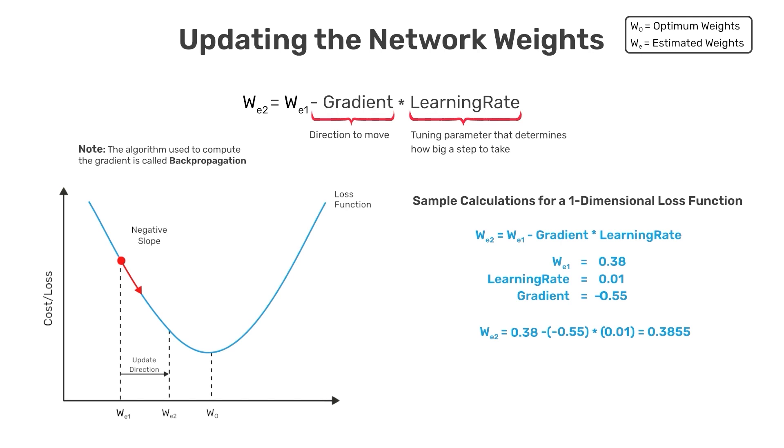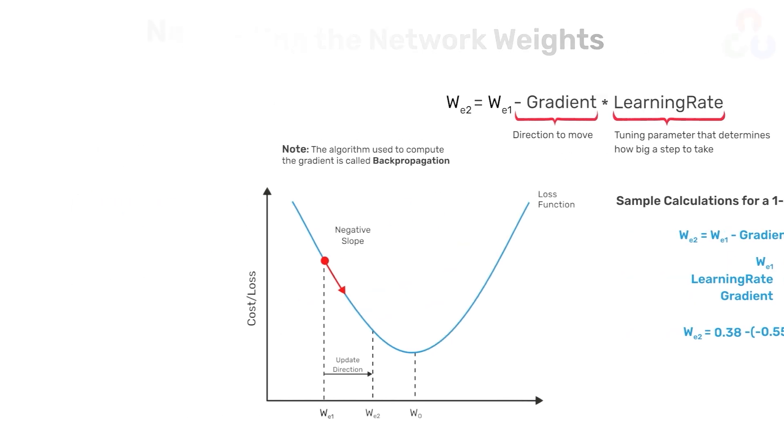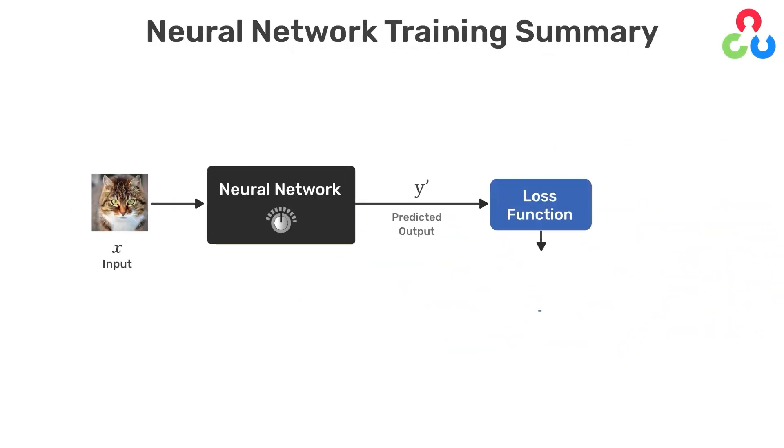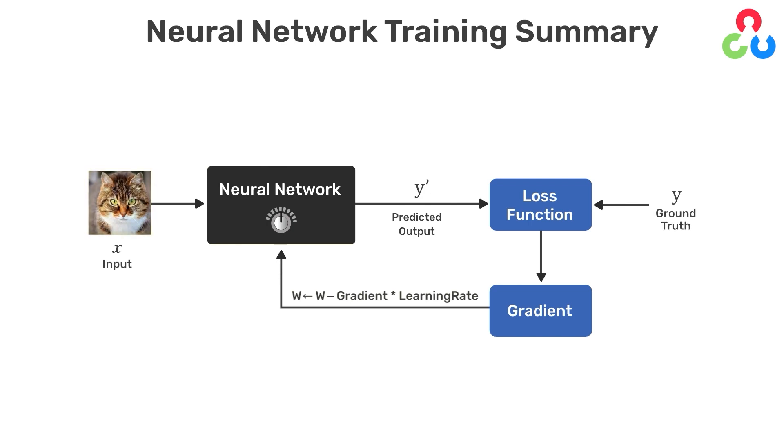Now that we've covered all the essential elements associated with training a neural network, we can summarize the process in the following diagram. Here you can see that we have an input image on the left and the output from the neural network on the right, which we refer to as Y prime. We use the ground truth label Y, which is part of the training data, along with the predicted output from the network to compute a loss.